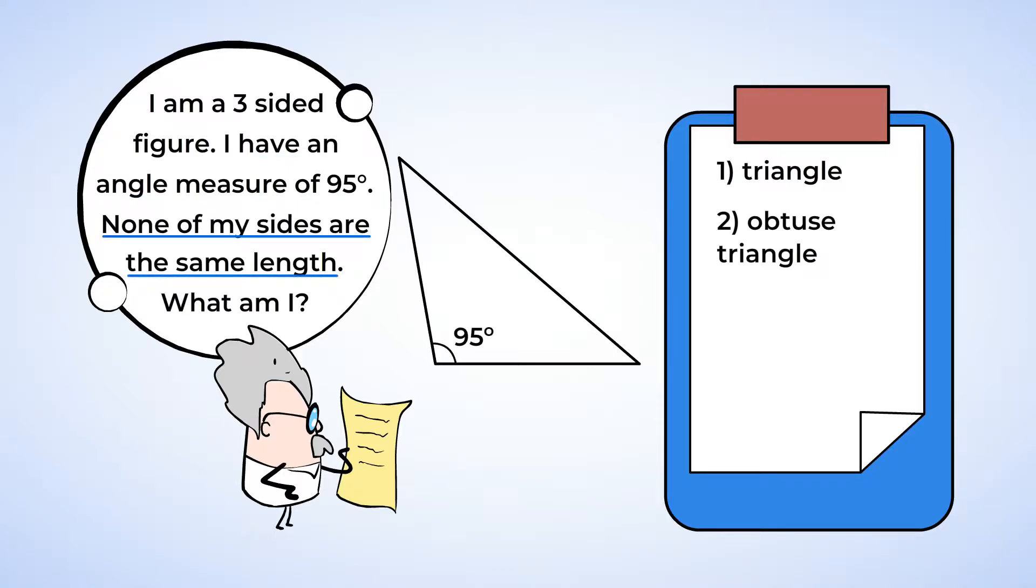And the last clue, none of my sides are the same length. If none of the sides are the same length, that makes it scalene. And so this figure is an obtuse scalene triangle. Fabulous solving skills.